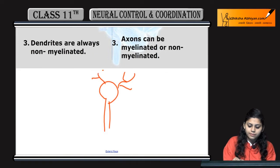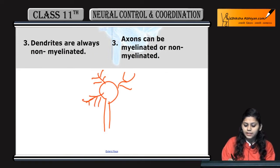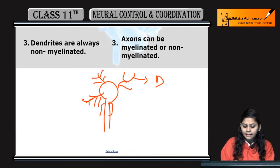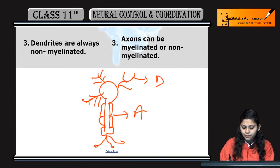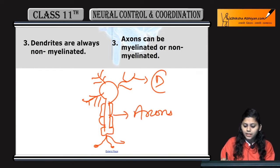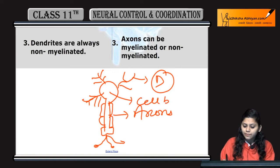Dendrites are present. Yeh jo branching pattern hai, these are dendrites and yeh hai axons. Yeh hai branching pattern, yeh hai cell body.